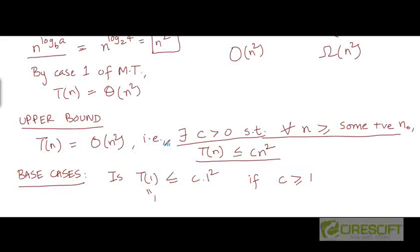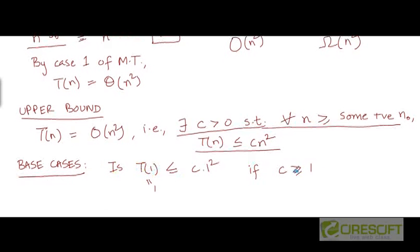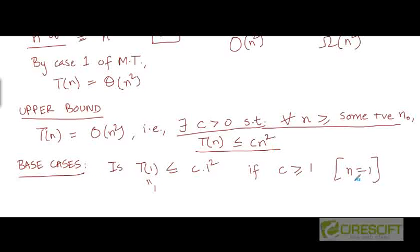The base case of the induction requires testing whether the claim is true at n = 1. We check whether T(1) ≤ c·1². We know T(1) = 1 and c·1² = c, so we need 1 ≤ c, which is true if c is chosen to be greater than or equal to 1. Assuming this constraint is satisfied, the base case is proven. We won't worry about proving the claim for n = 2, 3, and so on unless we specifically feel additional base cases are necessary.